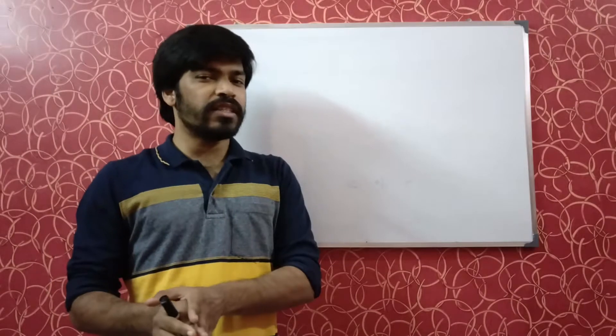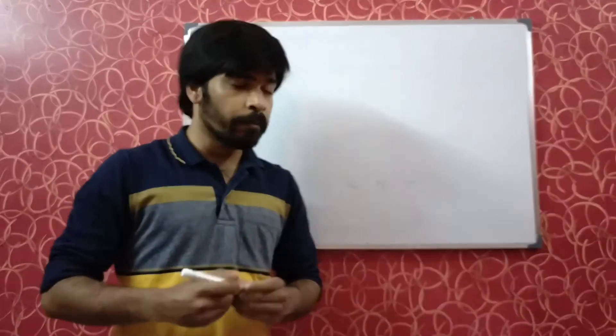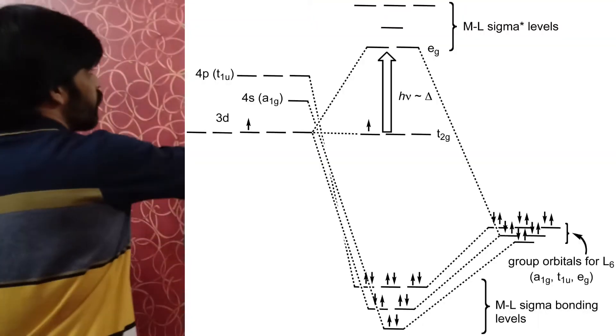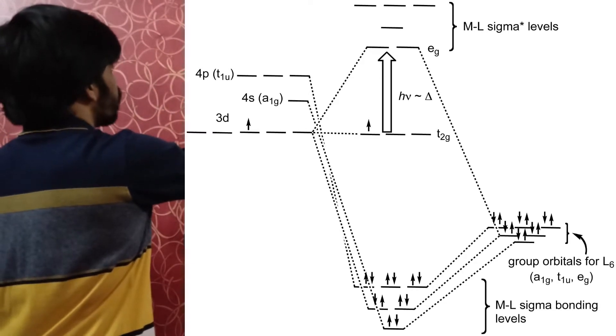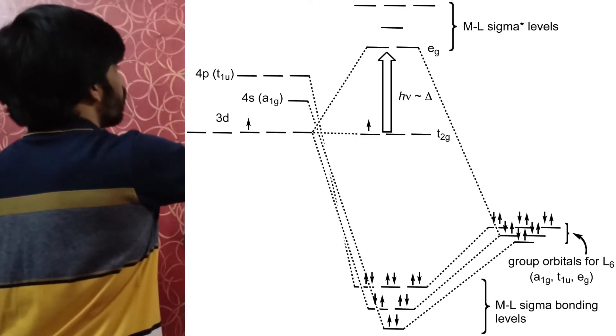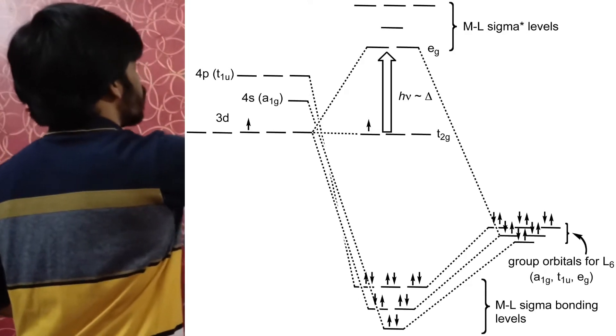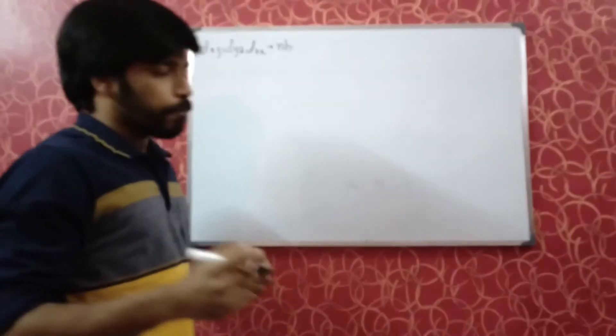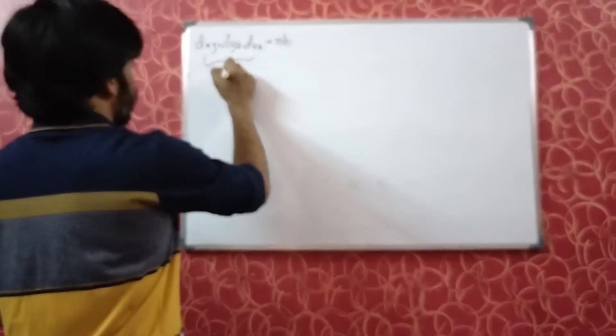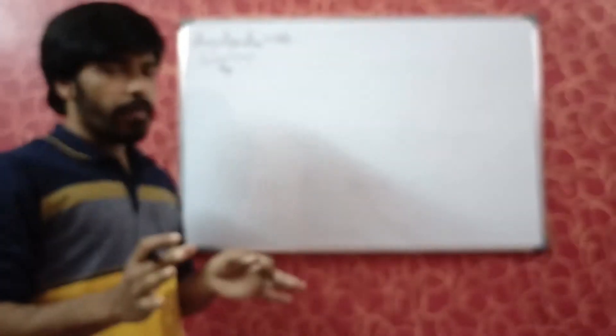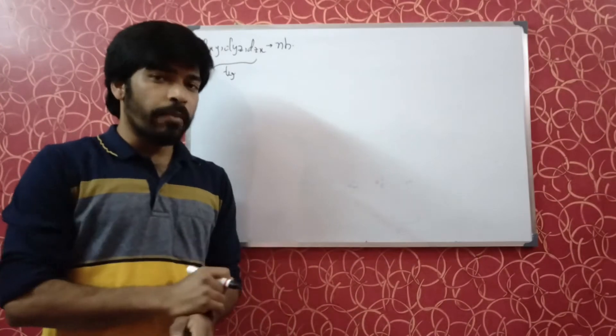So what orbitals are available after sigma bonding in a metal ligand? If you could recollect, the dxy, dyz and dzx orbitals were non-bonding in sigma bonding. These are of t2g symmetry and are available for taking part in pi bonding.